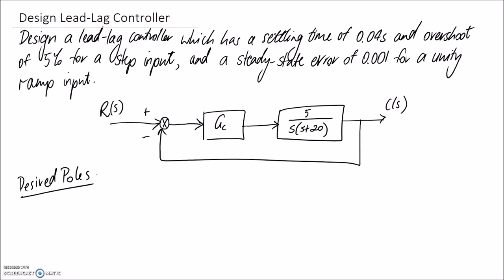The criteria we have: we're aiming for a settling time of 0.04 seconds, a percent overshoot of 5%, and a steady state error of 0.001, remembering that this is for a ramp input. I'm going to start by looking at the percent overshoot, from which I should be able to figure out the damping ratio required.